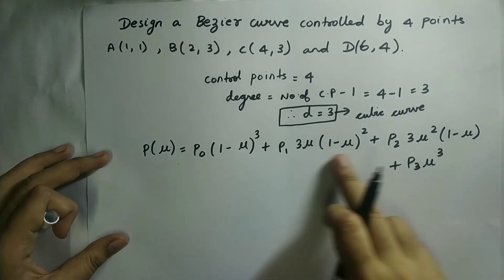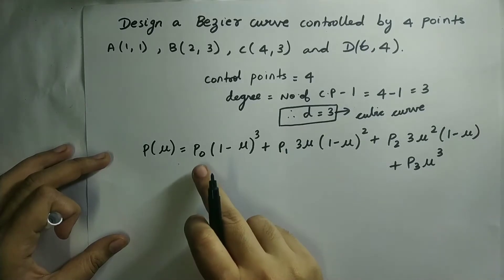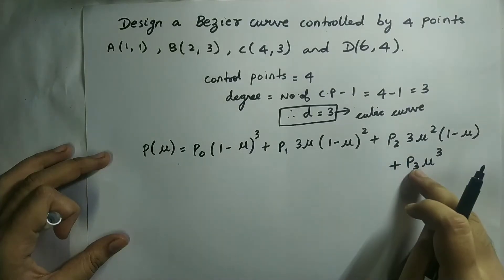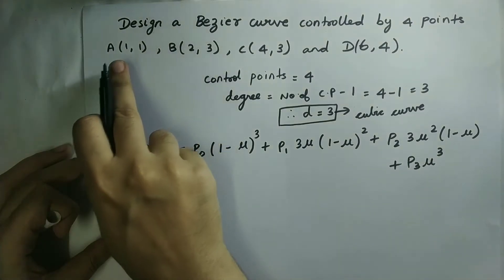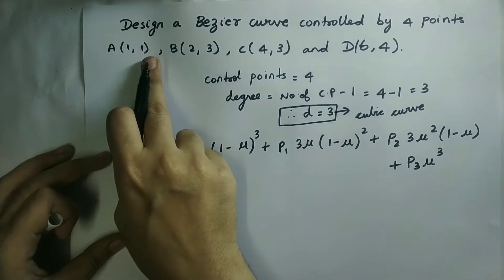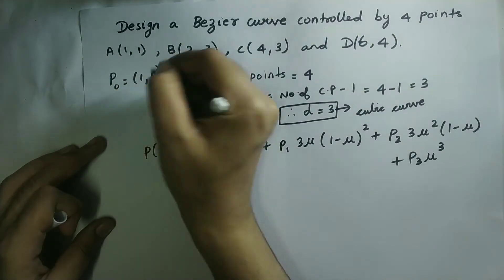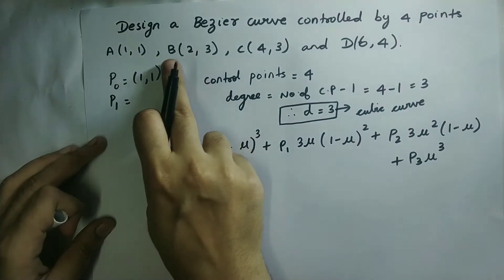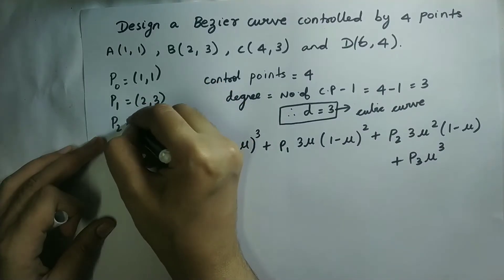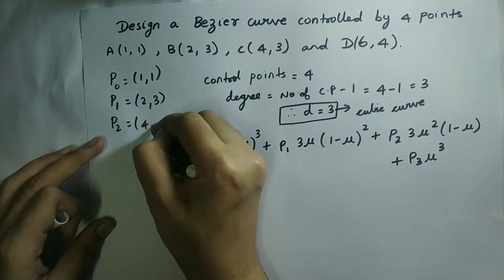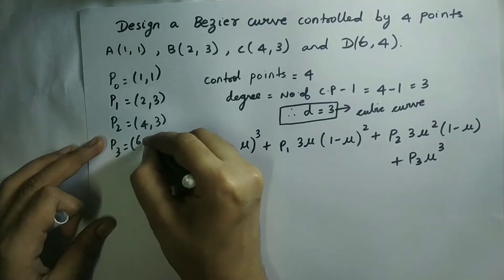In this equation, P0 is equal to point A's coordinates (1,1), P1 is equal to point B's coordinates (2,3), P2 is equal to point C's coordinates (4,3), and P3 is equal to point D's coordinates (6,4).